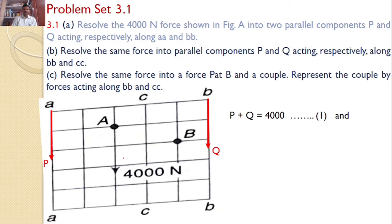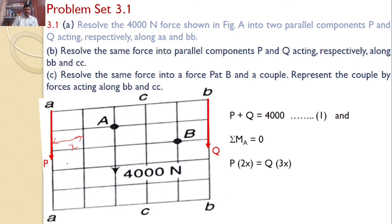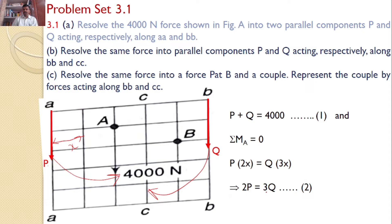The second condition to be satisfied is that the moments must also be the same. We will take the moment about any point in the system — I will take moments about point A. Let us consider this distance as X. If you take moments about point A, P multiplied by the total distance 2X must equal Q multiplied by the total distance 3X. Q will introduce a moment in one direction and P will introduce a moment in the opposite direction, giving P into 2X equals Q into 3X. Upon simplification, 2P equals 3Q.